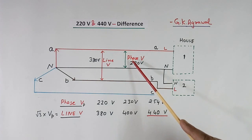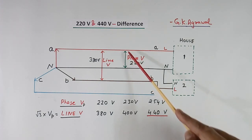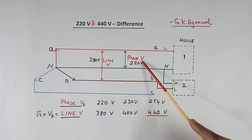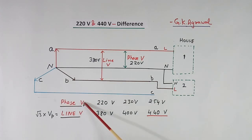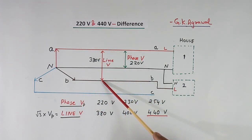The voltage between line to neutral is called the phase voltage, Vp. And the voltage between line to line is called the line voltage.